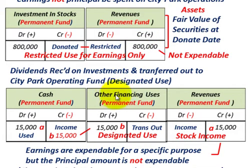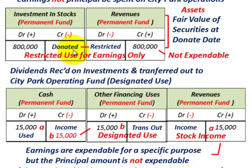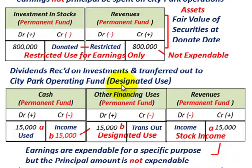Those are the basic entries here. We recognized revenues for donations and saw how to spend some of the income off those investments — in this case investment stocks, though the assets could be land or other resources. Land would be a different situation since you typically wouldn't receive investment income off land unless it was rented out. That covers the basic entries for how we handle revenues and income in the permanent fund.